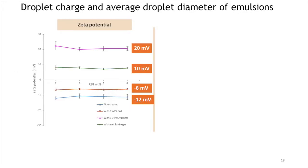We first looked at the effects of salt and vinegar addition on emulsion zeta potential, since droplet charge plays a role in stabilizing emulsion droplets against creaming. The addition of vinegar decreased the pH to 3.7 and increased the zeta potential to about +20 mV, while the addition of salt decreased the zeta potential to −6 mV due to charge screening. For both salt and vinegar-treated emulsions, the zeta potential was about +10 mV. The original emulsion's droplet charge was about −12 mV, with no significant difference as canola protein concentration increased from 1 to 4%.